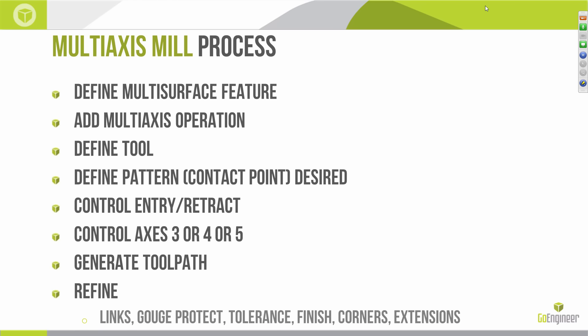The next step, controlling axes, is really important. Sometimes I do this first, especially if I'm limiting it to three axes, but we can limit it to four or five axes from the possible five. We'll generate a toolpath and then refine it — things like links, adding gouge protect, maybe overcutting the part or forcing it to go deeper, blending the toolpaths, extending or trimming at the ends. All sorts of neat stuff. So let's jump into it.